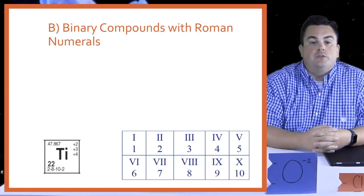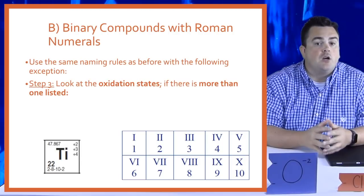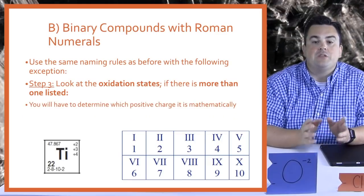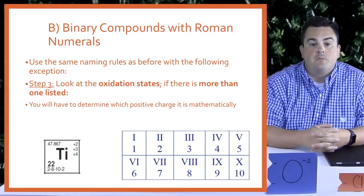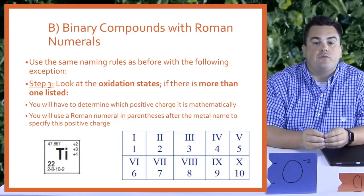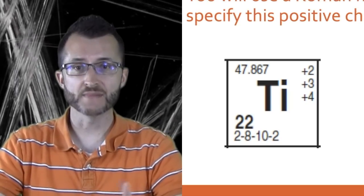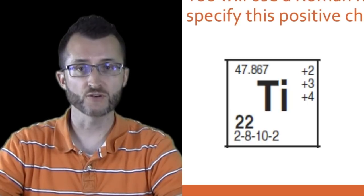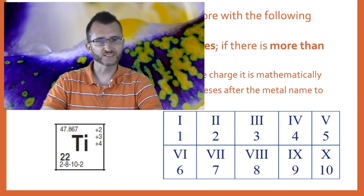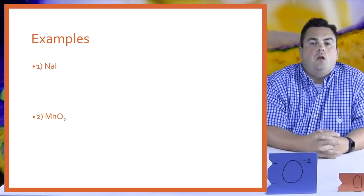Binary compounds with Roman numerals. Use the same naming rules as before with the following exception. In step three, look at the oxidation states. If there's more than one listed, you will have to determine which positive charge it is mathematically. You will use a Roman numeral in parentheses after the metal name to specify this positive charge. For example, titanium has multiple oxidation numbers — it can be +2, +3, or +4. Many students are a little shaky on Roman numerals, so please note the Roman numerals shown in the picture.